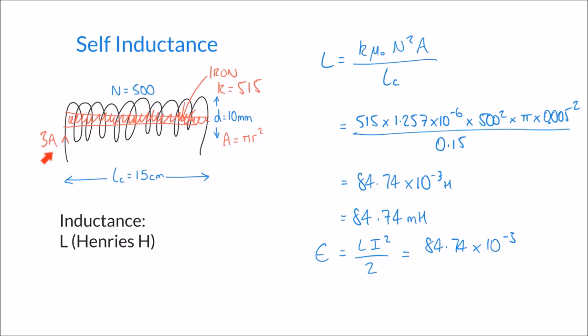We use the same current of 3 amps, so that's 3 squared in the formula, all divided by 2. That gives an answer of 381.33 times 10 to the minus 3 joules, or 381.33 millijoules.